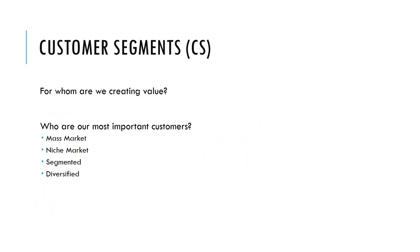Now that we were talking about customer segments, let's move to that block. We need to ask ourselves: for whom are we creating value? Who are our most important customers? Are we catering to the mass market, or is this a niche market? In the Comparlente case — the blind people's audio book software — it's a niche market of people with low eyesight or who are blind, not a mass market like Audible, which caters to anyone who wants to hear books. Is this a segmented customer scenario or a diversified type of scenario? These are important questions when determining what our customer segments are.